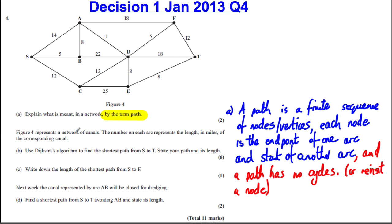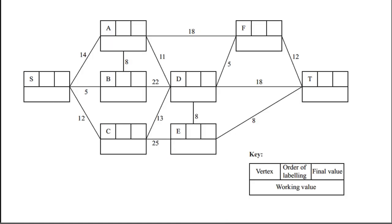The figure represents a network of canals, and the lengths in miles of each canal are given. Use Dijkstra's algorithm to find the shortest route from S to T, using the Dijkstra working figure provided.